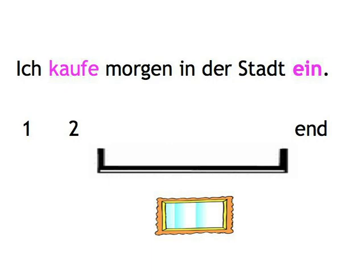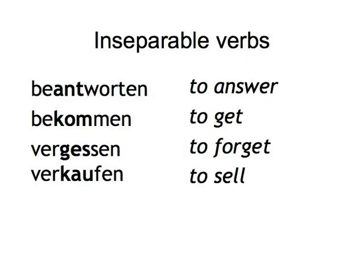This is a general principle and applies to all situations where we have more than one word forming what we call the verb phrase. The finite verb — the one with the ending — is the second element, and anything else that completes the idea of the verb is at the end. Who knows, maybe Germans want to hold the listener's attention by saving some of the most newsworthy information up to the very end. But let's go back to our separable verbs before we have a look at some more of these verbal frames.